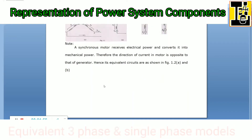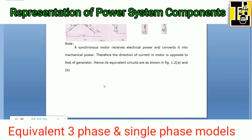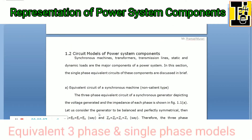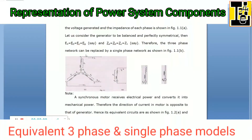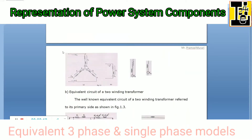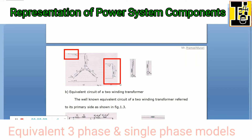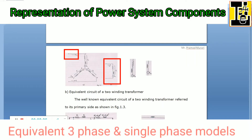The synchronous motor receives electrical power and converts it into mechanical power. Therefore, the direction of the current in the motor is opposite to that of the generator. If the direction of the current is in the outward direction for the generator, then for the motor it will be in the inward direction. The equivalent single phase network for the synchronous motor will be the same as the equivalent network diagram for the synchronous generator.